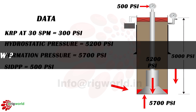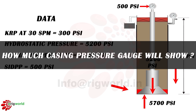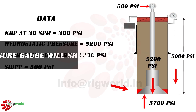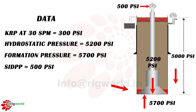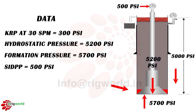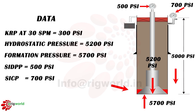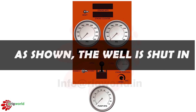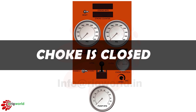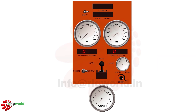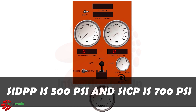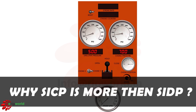How much will the casing pressure gauge show? The casing gauge will show the differential pressure between formation pressure and hydrostatic pressure in the annulus, which is 700 psi. As shown, the well is shut in, the choke is closed, and the pump is at 0 SPM. SIDPP is 500 psi and SICP is 700 psi.